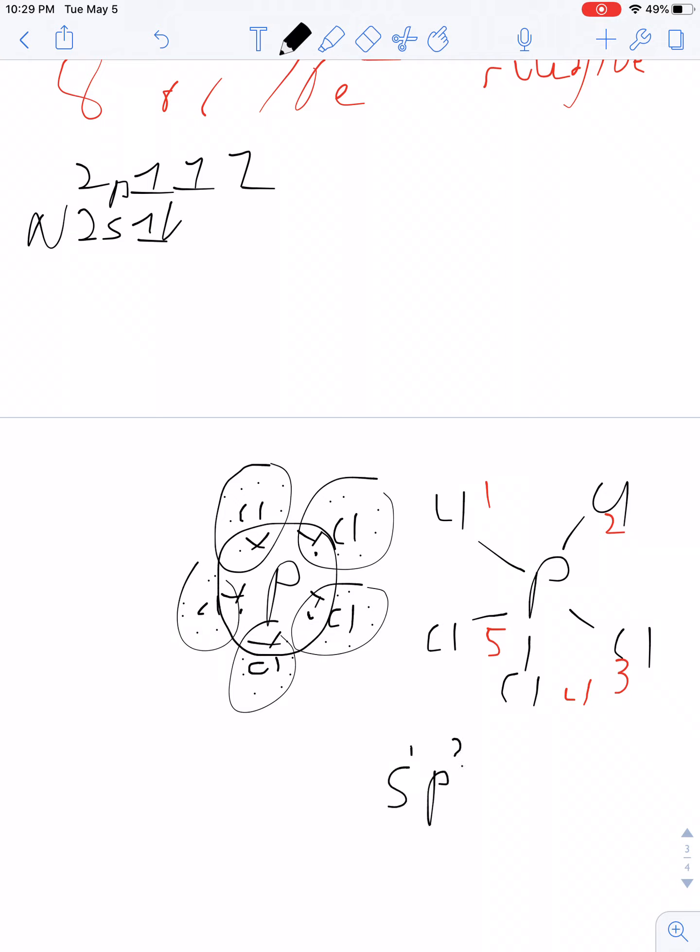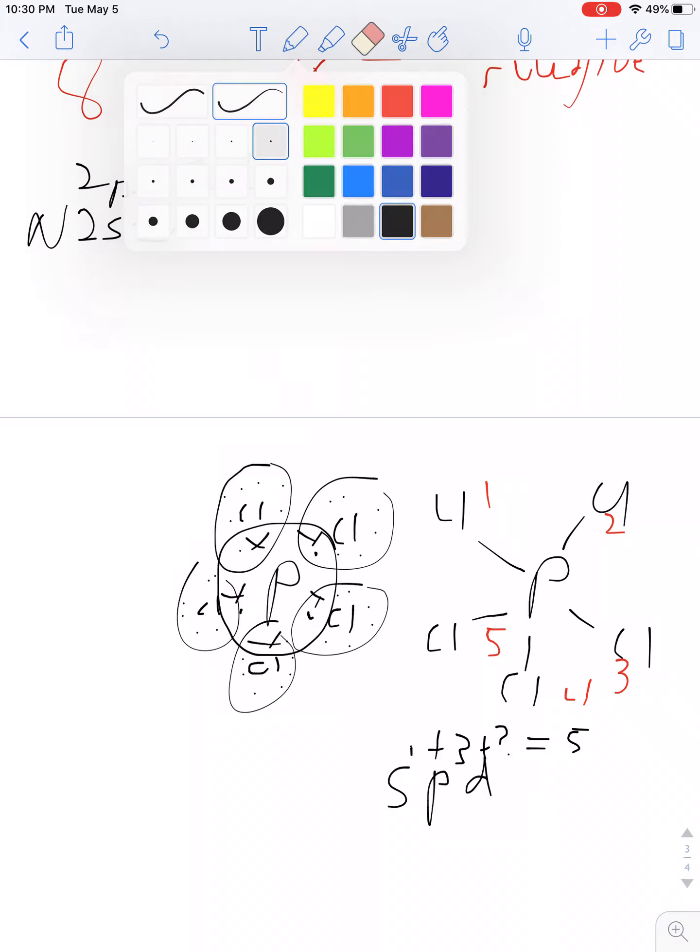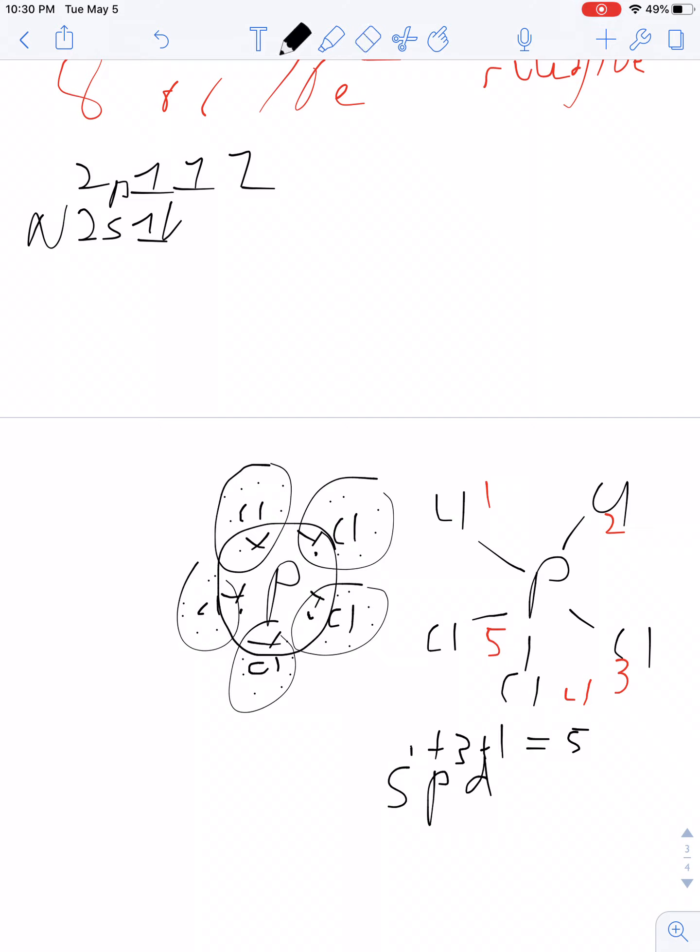What's the maximum number of Ps you can have? 3. Well, 1 plus 3 does not equal 5. So, I have to involve the D orbitals. And how many Ds can I have? A maximum of 5. But I only need one of my D orbitals to equal 5. So, my hybridization is sp3d. Okay? So, the hybridization on the phosphorus is sp3d.